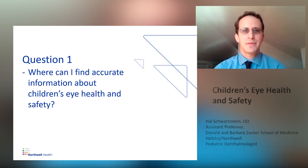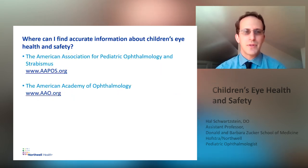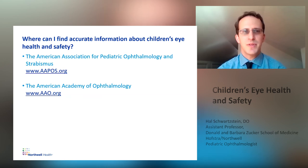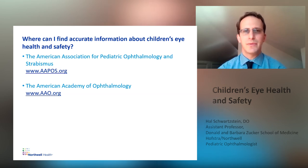Question one: where can I find accurate information about children's eye health and safety? You can go to the American Academy of Pediatric Ophthalmology and Strabismus at www.aapos.org, or the American Academy of Ophthalmology at www.aao.org.